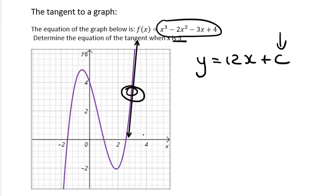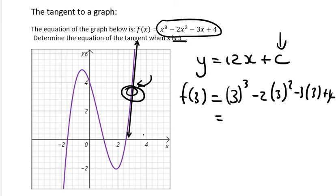Now how do we find c? We have to substitute in a point. The problem is we only know the x value at that point, but we do have the equation of the original graph, so we can plug the x value in to see what the y value is. Plugging in x = 3 gives us a value of 4, so the coordinates at the point of contact are (3, 4).